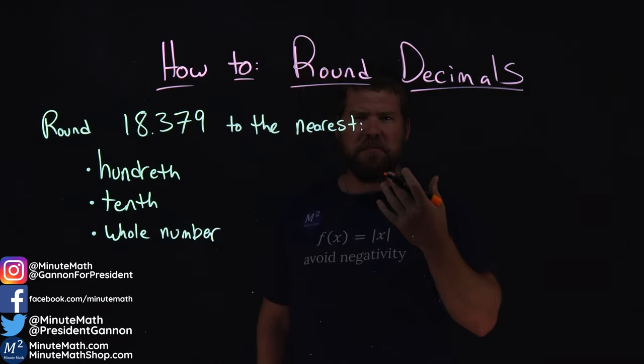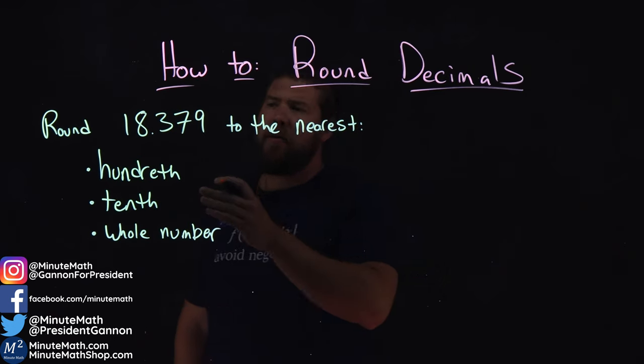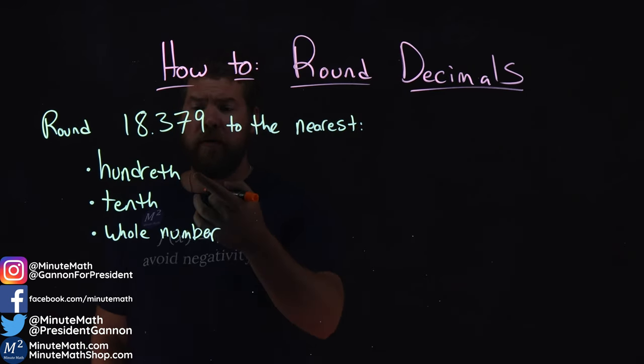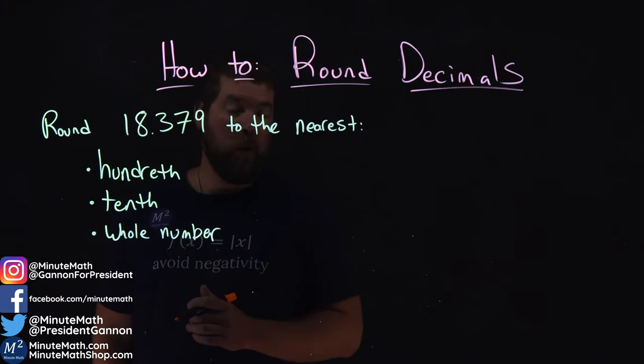We're given this problem here to talk about rounding. Round 18.379 to the nearest, and we're given the hundredth, the tenth, and whole number.